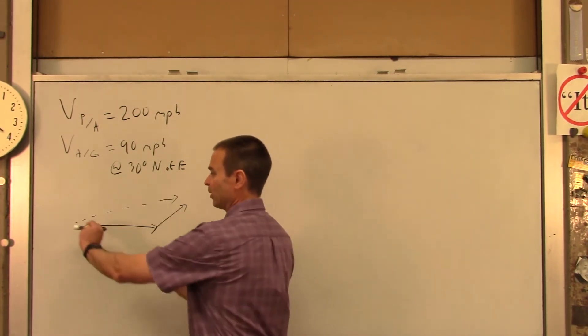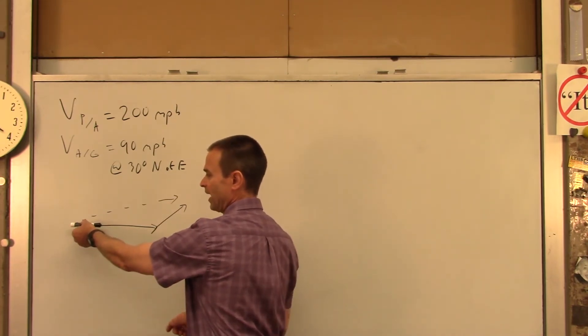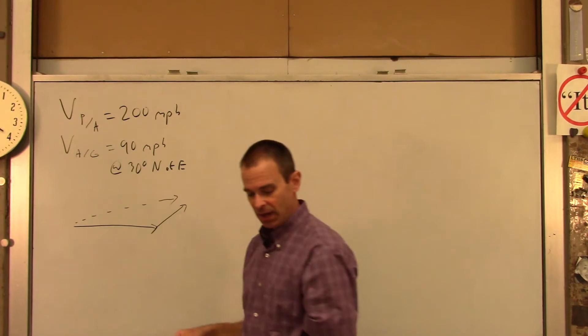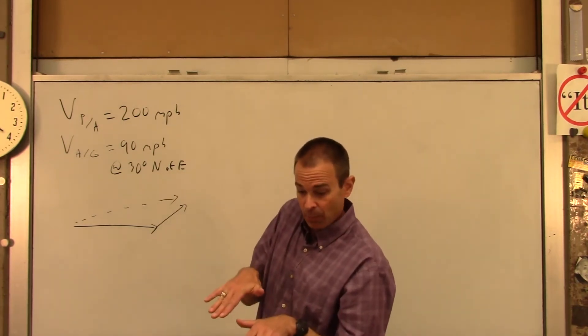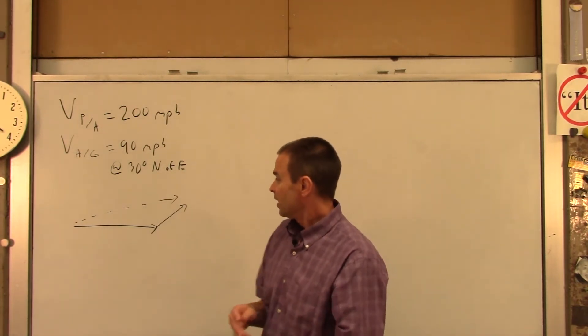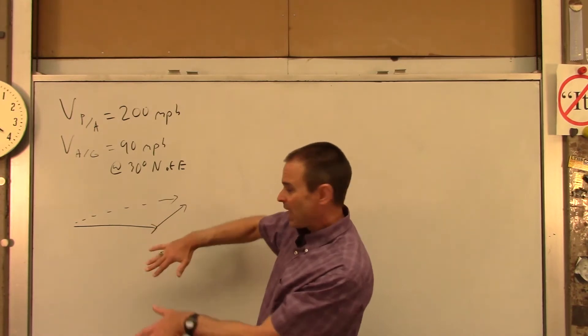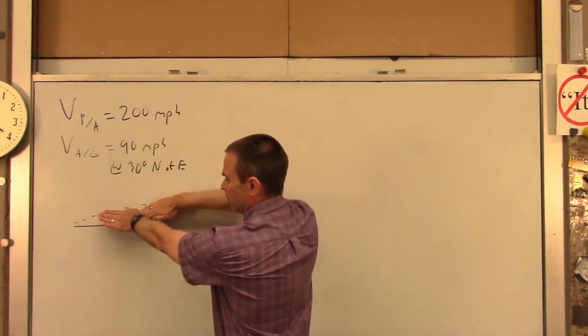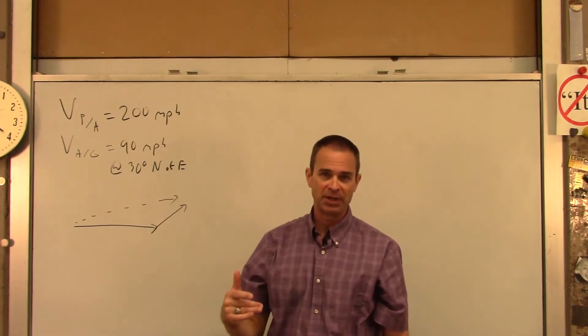So the pilot's got to correct. So instead of pointing his plane due east, he's going to have to face it a little bit south. And we're going to figure out what angle south he's got to point it. So more or less this whole picture is going to kind of rotate clockwise.